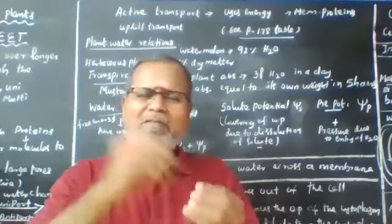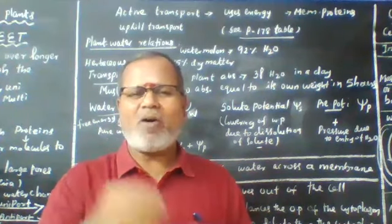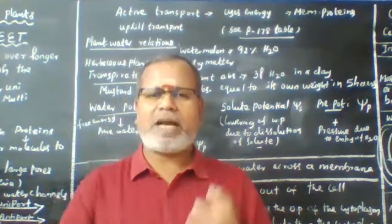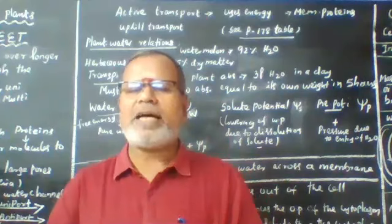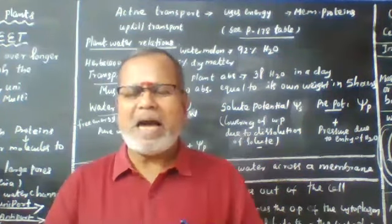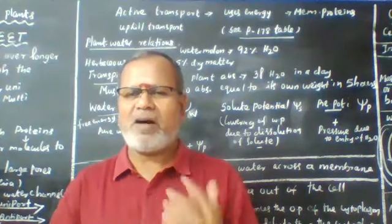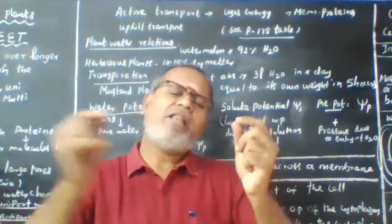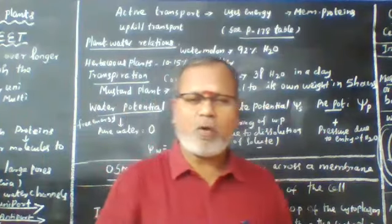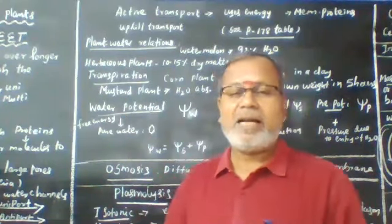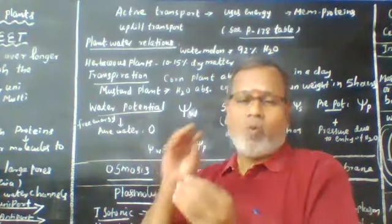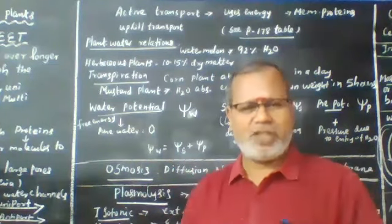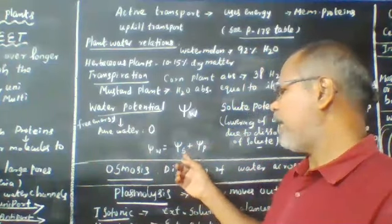When solute is added to water, the water potential decreases because of the dissolved solute. The lowering of water potential due to dissolution of solute is called solute potential (psi S). Pressure potential (psi P) arises when pressure is developed, such as in guard cells filled with water — called turgid — creating turgor pressure. The relationship is: psi W = psi S + psi P.